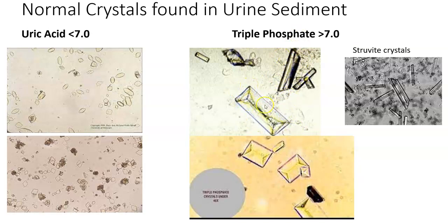Triple phosphate crystals are prism-shaped, which is why they look like envelopes when we look at them. Those apparent folds are actually the lines of the other side — you're looking at the flat bottom of the crystal, and this line would be the top. That's why they end up with little envelope shapes. Sometimes all you can see is the rectangle, and when that happens, check the pH first, because a rectangle could have been a rhomboid of some sort.